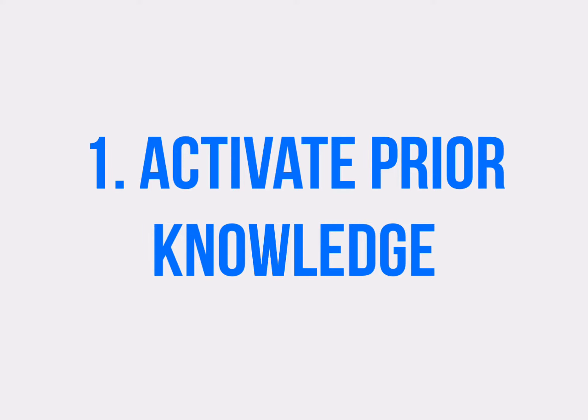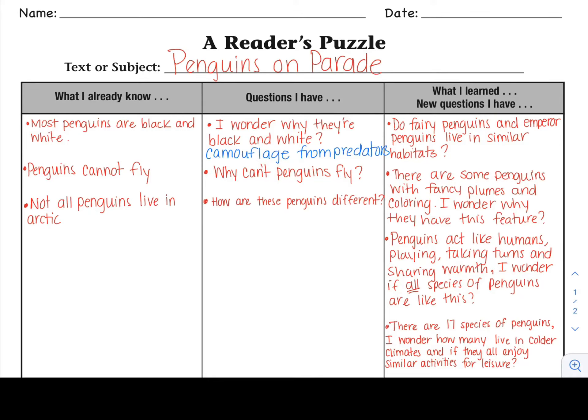As we've already discussed, one of the first things we have to do when reading nonfiction is activate our prior knowledge about the topic. So let's begin today by revisiting the organizer that we filled out in the previous lesson — a reader's puzzle. Let's take a look at what we've already learned and new questions we developed from Penguins on Parade. Here are some of the new facts and questions I developed after reading about penguins yesterday. Let's discuss some of the items you found and questions you have as well.